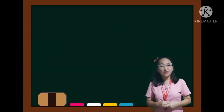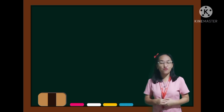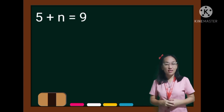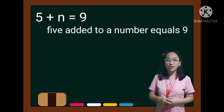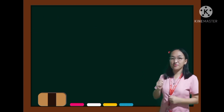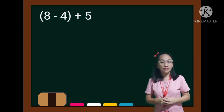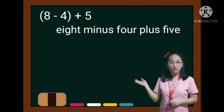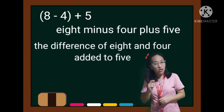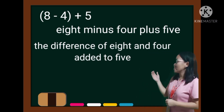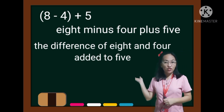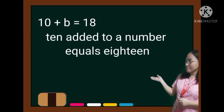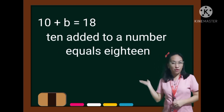And for the examples of equations translated to words or phrases: in the first example, 5 added to a number equals 9. For the second one, we have 8 minus 4 plus 5 — or you may also write: the difference of 8 and 4 added to 15. And for the third example, we have 10 added to a number equals 18.